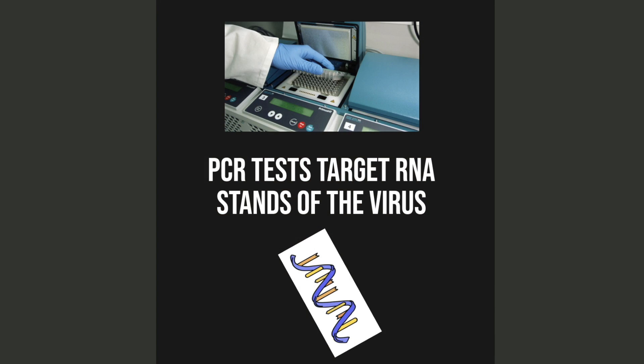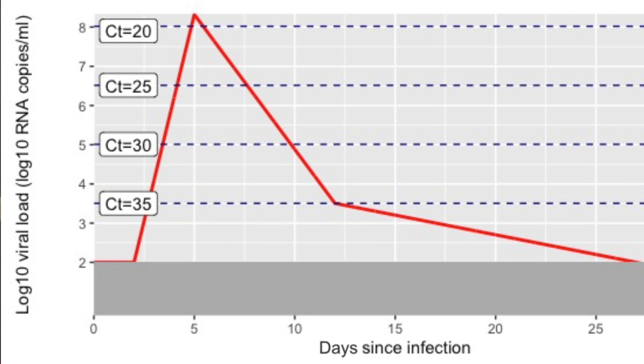When we're looking at the viral dynamics of this virus, we're oftentimes representing it on what we call CT values. That's the value that comes off of the PCR instrument to tell you how much virus was in the sample. Normally it looks like a pretty broad triangle — you'd have a lot of virus around day 8 to 15 post-infection, and maybe a lot of virus at the beginning.